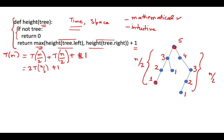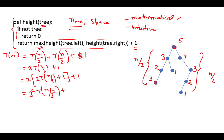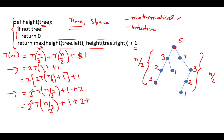Now what we do is unroll this recursion one step further. T(n/2) is itself 2T(n/4) + 1, so substituting we get 2² · T(n/2²) + 1 + 2. If we unroll it further, we get 2³ · T(n/2³) + 1 + 2 + 4. You may wish to verify the unrolling manually, but this pattern is what you will arrive at.